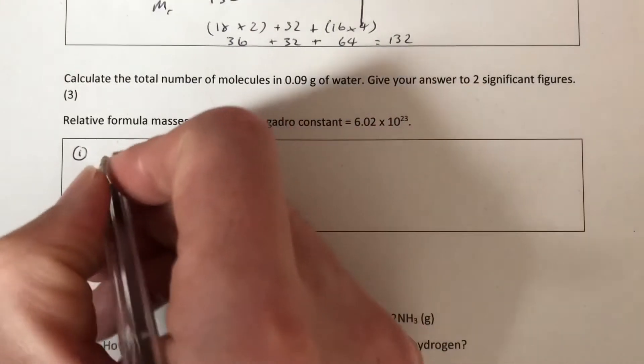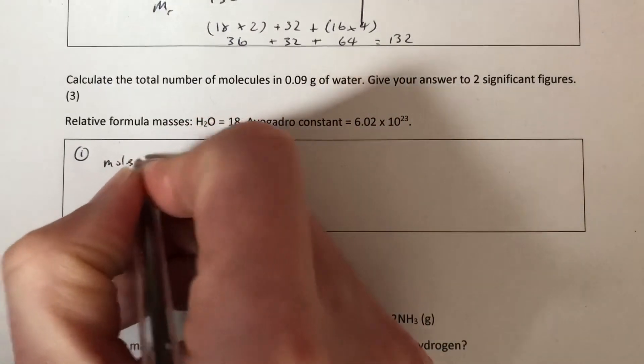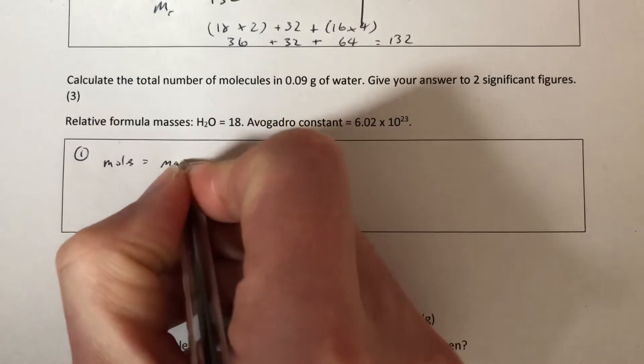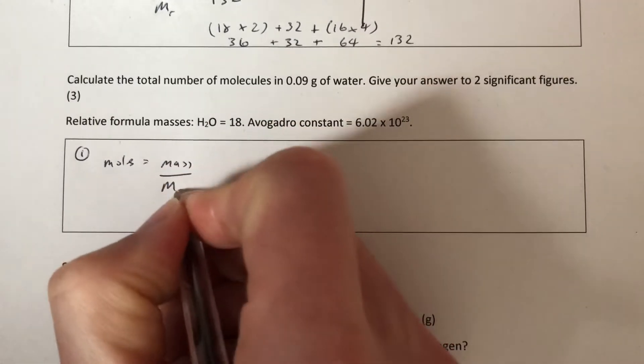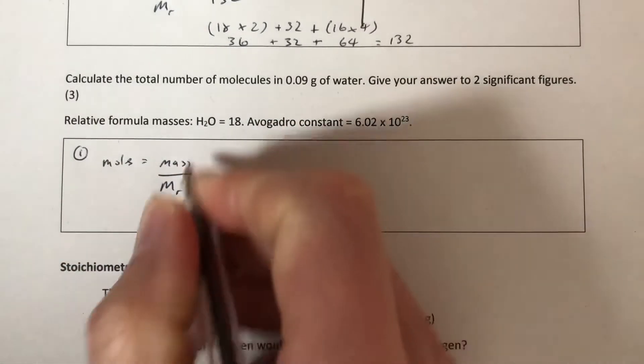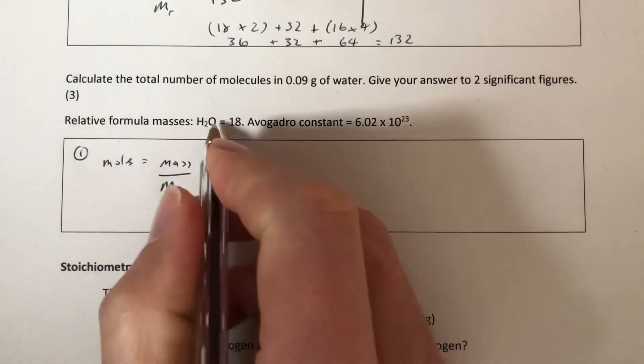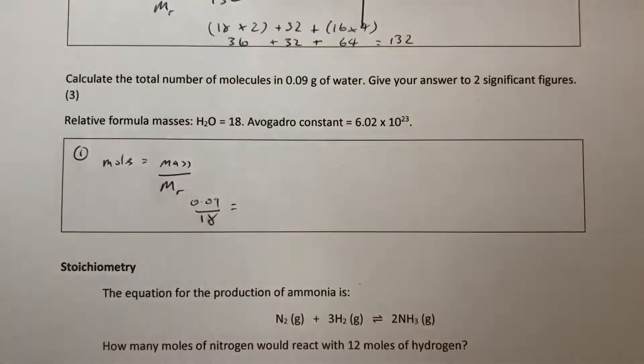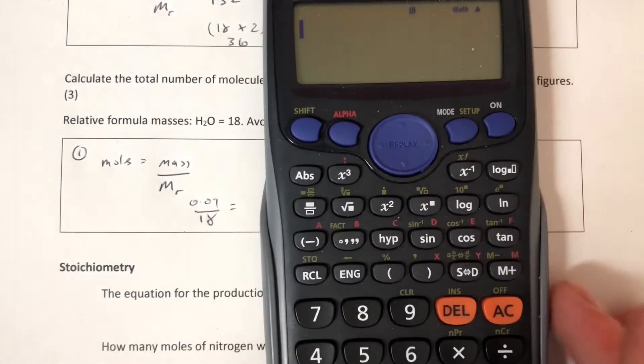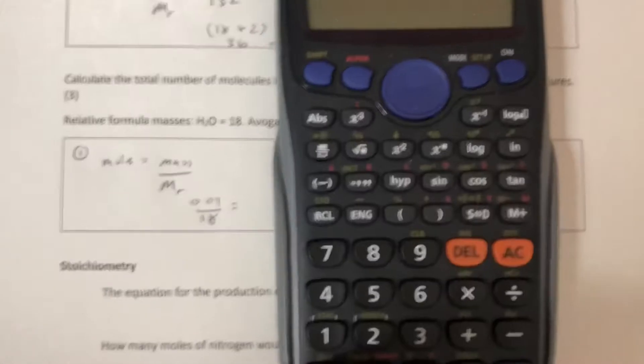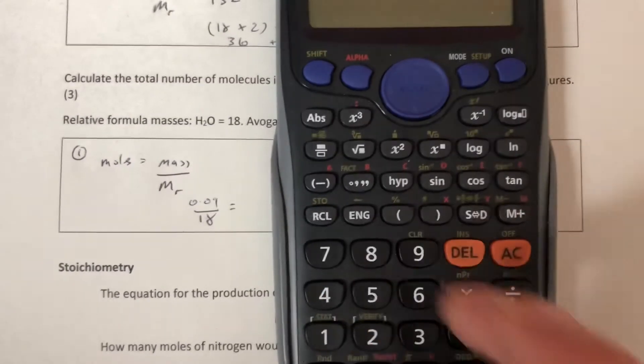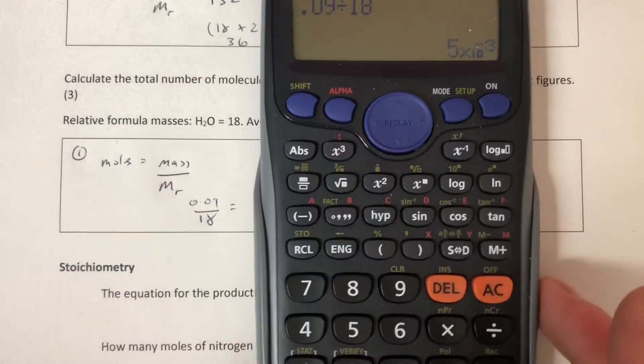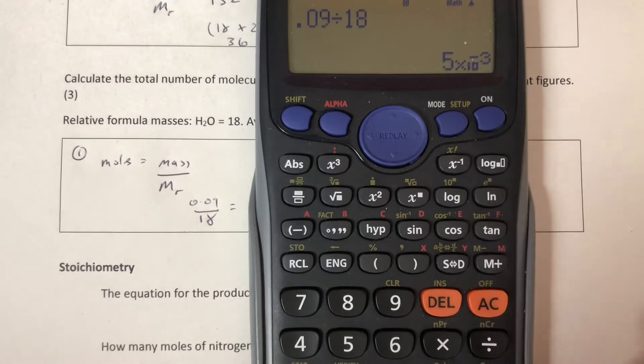We've been given a mass of water, so we need to use moles equals mass over formula mass to start with. Mr is the abbreviation I use for formula mass. The formula mass of water is 18, so it's 0.09 divided by 18. That equals 5 times 10 to the minus 3 in standard form, which is 0.005.